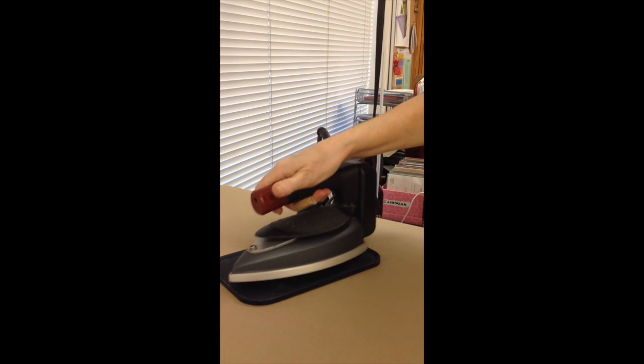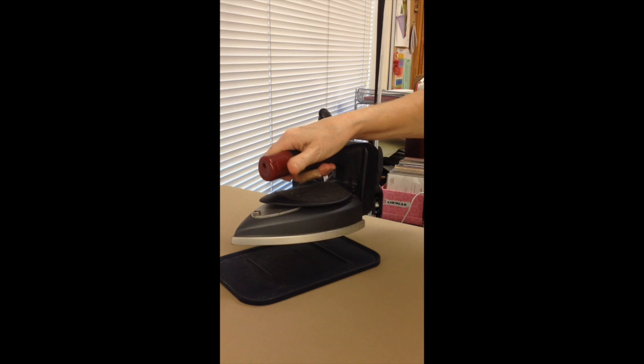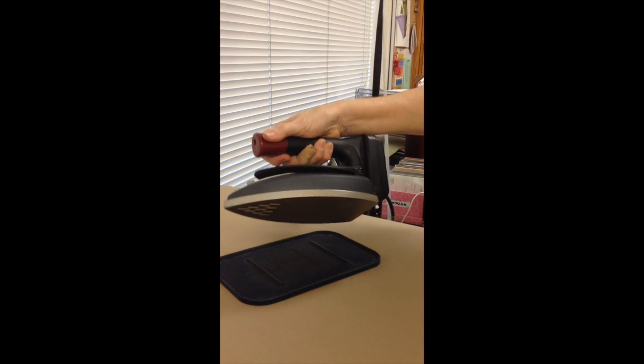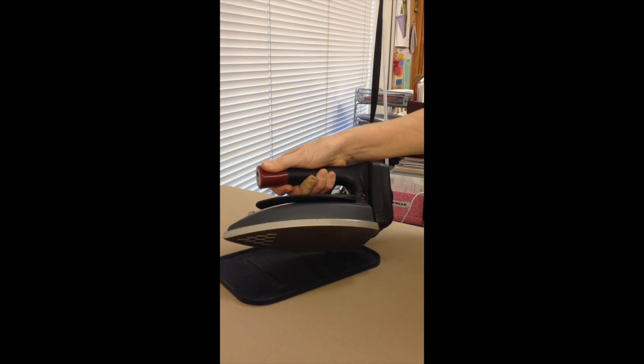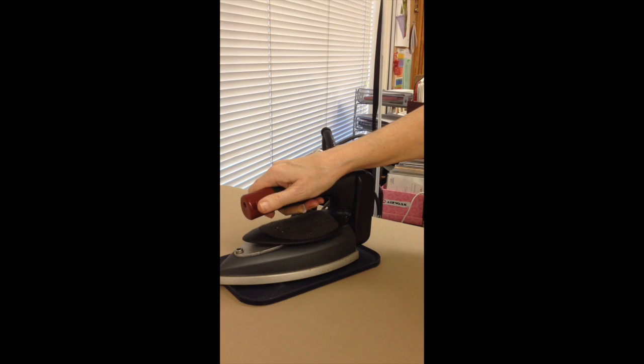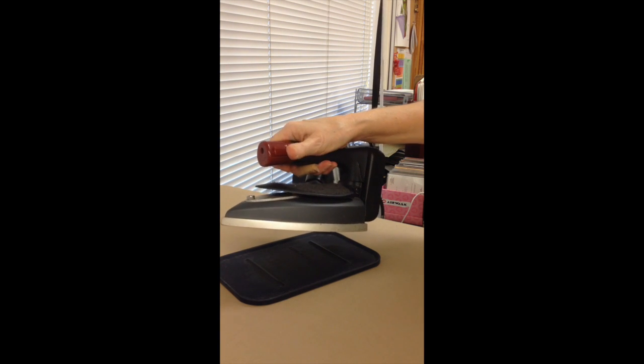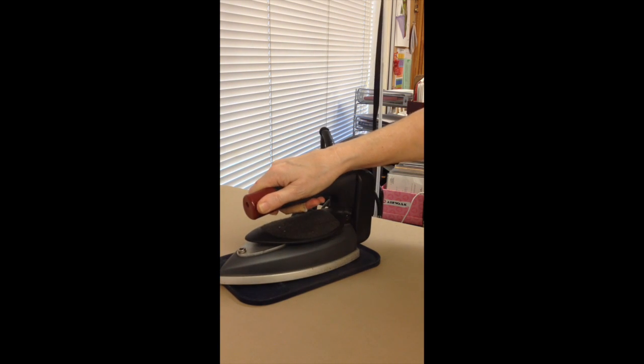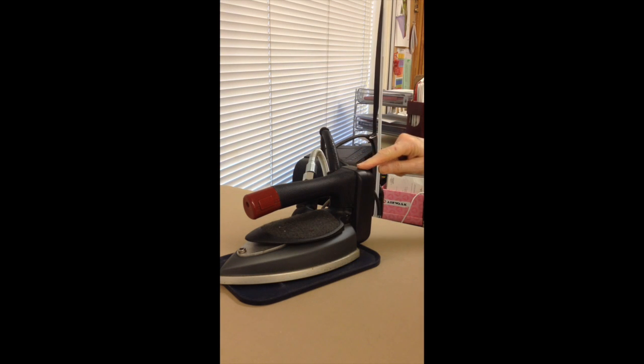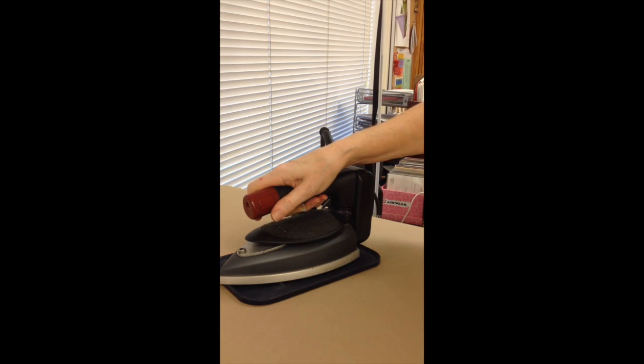Once the iron is heated up, you can release the steam by pumping the red button that is on the handle. The reason you want to pump the iron to create steam is to give the water that's coming into this chamber time to turn into steam before you release it onto your garment.